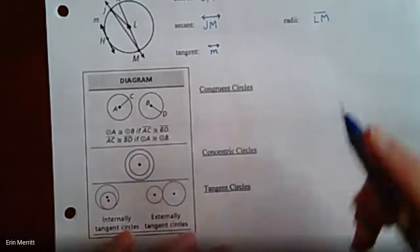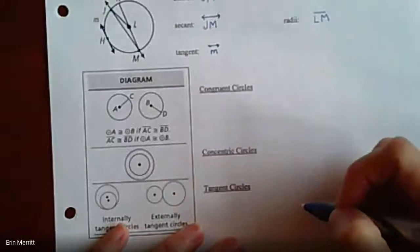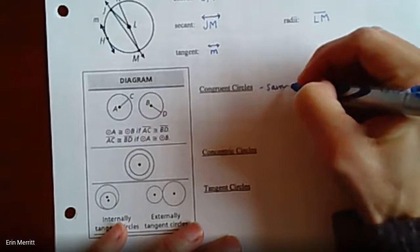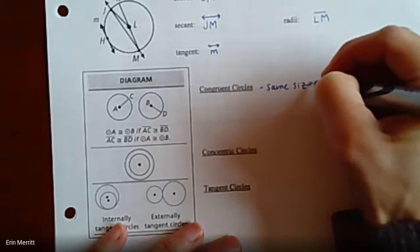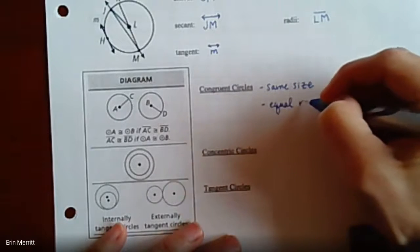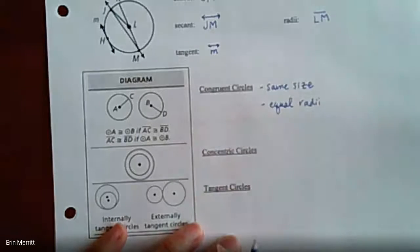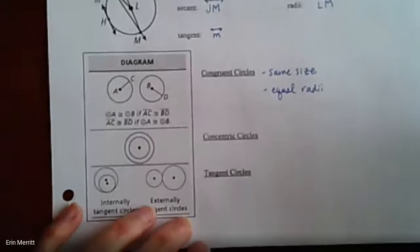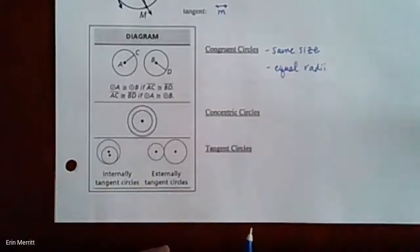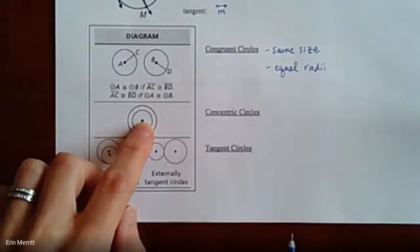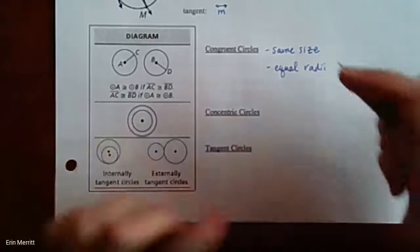Congruent circles essentially means equal — they are the same size, meaning they have equal radii (the plural of radius). Concentric circles — I always think of a dartboard or ripples in water — have the same center point but just different sized radii.